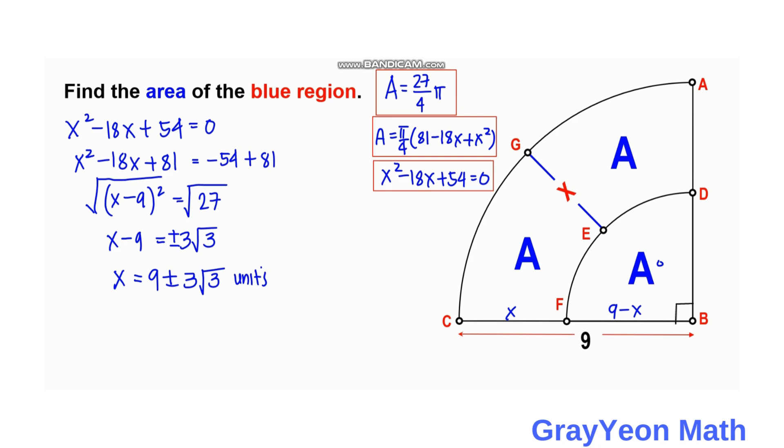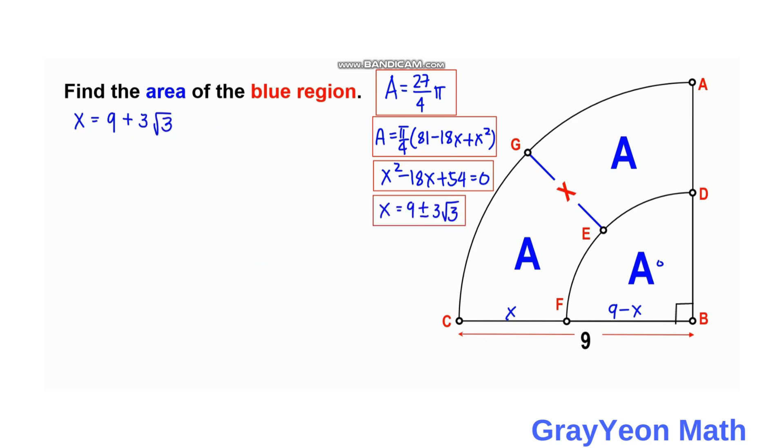Next is we will check which will be the final answer. So for the first instance, we take 9 plus 3 square root of 3. And 9 minus X will equal 9 minus 9 plus 3 square root of 3. And we have here 9 minus 9 minus 3 square root of 3. So this cancels out and this gives us 9 minus X to have the value of negative 3 square root of 3.